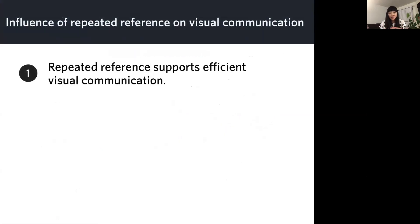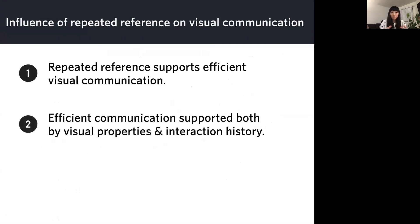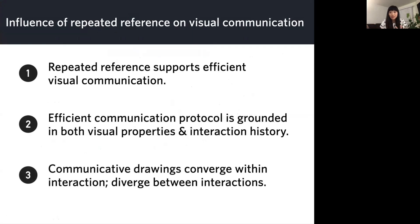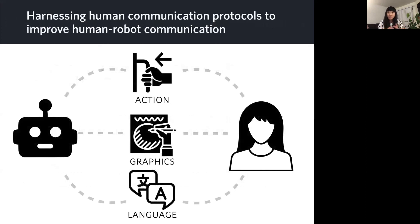So to summarize, we found in this study that repeatedly depicting an object supports efficient visual communication, and that such efficiency was supported by both the visual properties of the drawings, but increasingly by continuity in interaction history. And that these communicative drawings tended to become more consistent within an interaction, but increasingly different between interactions, suggesting that multiple solutions may exist in the space of graphical conventions that can be used to solve this coordination problem. And I think the upshot for robotics and HRI researchers is that humans can rapidly develop sophisticated communication protocols using a variety of different information modalities, including action, graphics, and language. And I hope that a deeper understanding of what properties human communication protocols share across these different modalities will help inspire strategies for developing more robust human-robot communication.